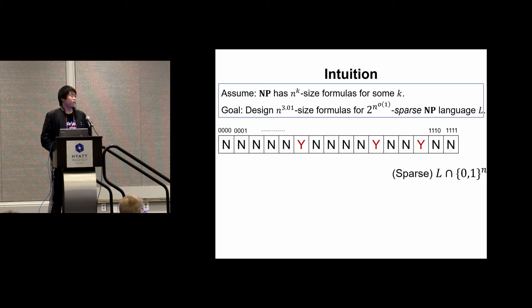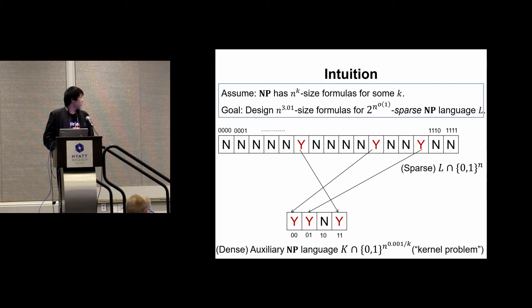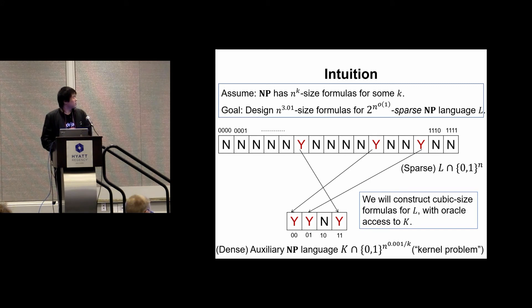I will first give some very informal intuition about our proof. We have a sparse NP language L, and we want to construct an auxiliary NP language K. We want to have a one-to-one correspondence between the yes instances of L with the yes instances of K. Basically we want that yes instances of L can fit into the truth table of the auxiliary language K. Because L is sparse, there are not too many yes instances, so the truth table of K doesn't need to be too big. We can make the input length of K very small.